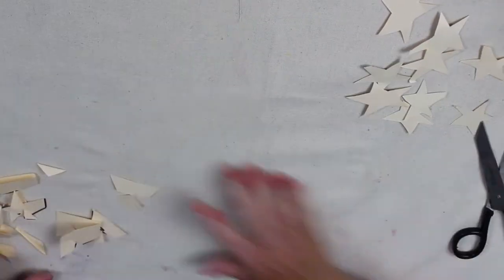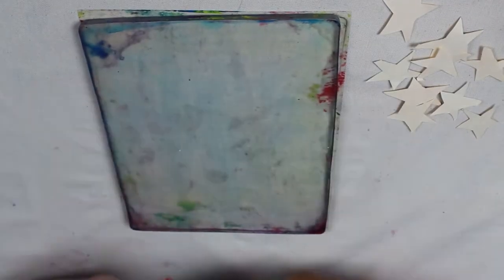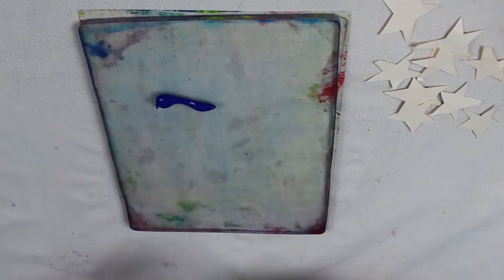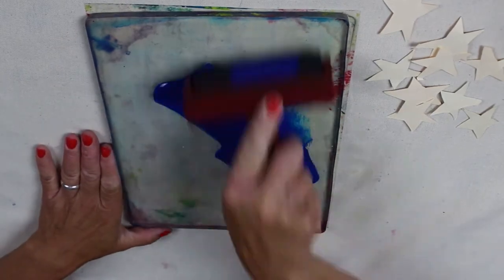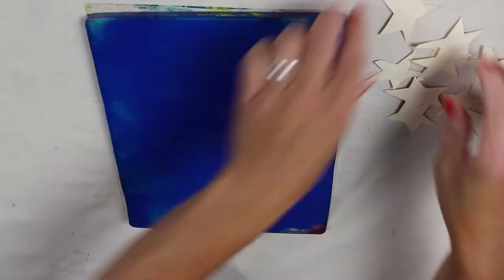After you're done cutting out your stars, set them aside and get your jelly printing plate. We're going to be putting some Cool Blue on and spreading it with a brayer. We want to have a thin coat and then we're going to apply our cutout stars.